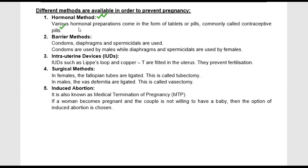Various hormonal preparations come in the form of tablets or pills, commonly called contraceptive pills. Contraceptive pills work by altering the hormone levels in our body that are needed to maintain pregnancy, so that pregnancy does not occur.